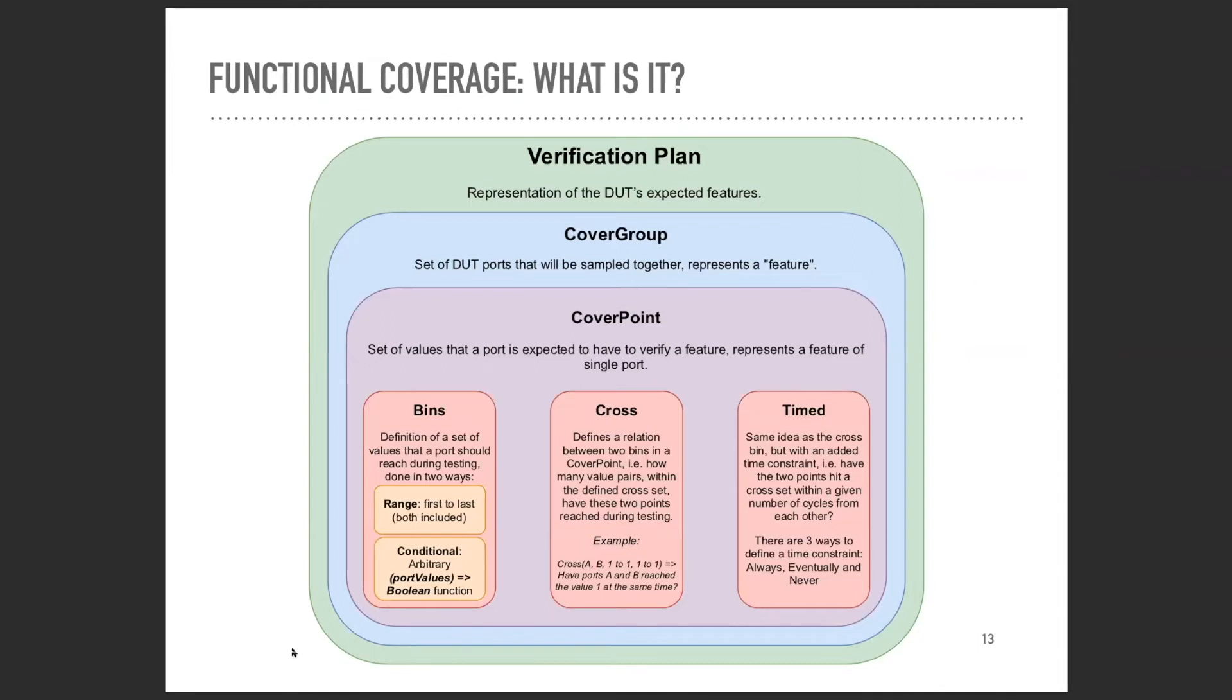In our framework, we have four different main types of cover points. We have the regular cover points, which is equivalent to what SystemVerilog calls a cover point. These contain bins that are defined by ranges, and a hit is considered when a value is sampled within that range. Each cover point is associated to a port. Then we have cover conditions, which have an arbitrary number of ports associated to user-defined predicates. A hit is considered when this predicate is satisfied given a set of sampled points. This is only possible thanks to the functional nature of Scala - stuff like this is a lot harder to do in SystemVerilog.